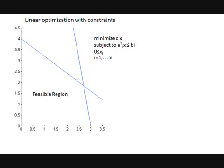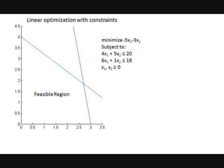A linear optimization problem, or LP, is drawn here along with its feasible region. We want to minimize our objective function, ZX, subject to the constraints AIX less than or equal to BI for I equals 1 to M. In this simple example, X is a two-dimensional vector.